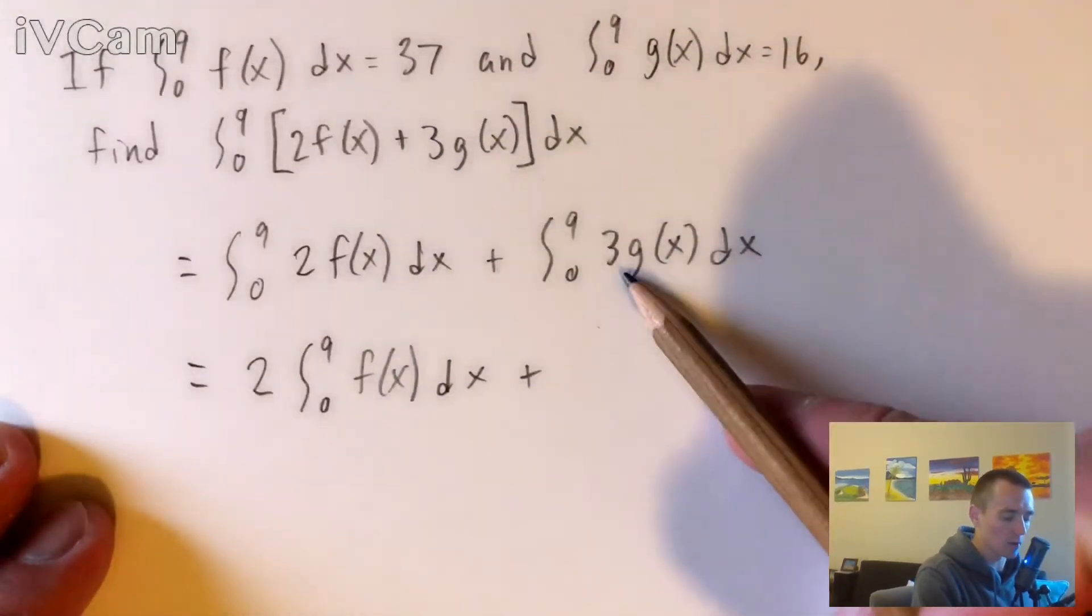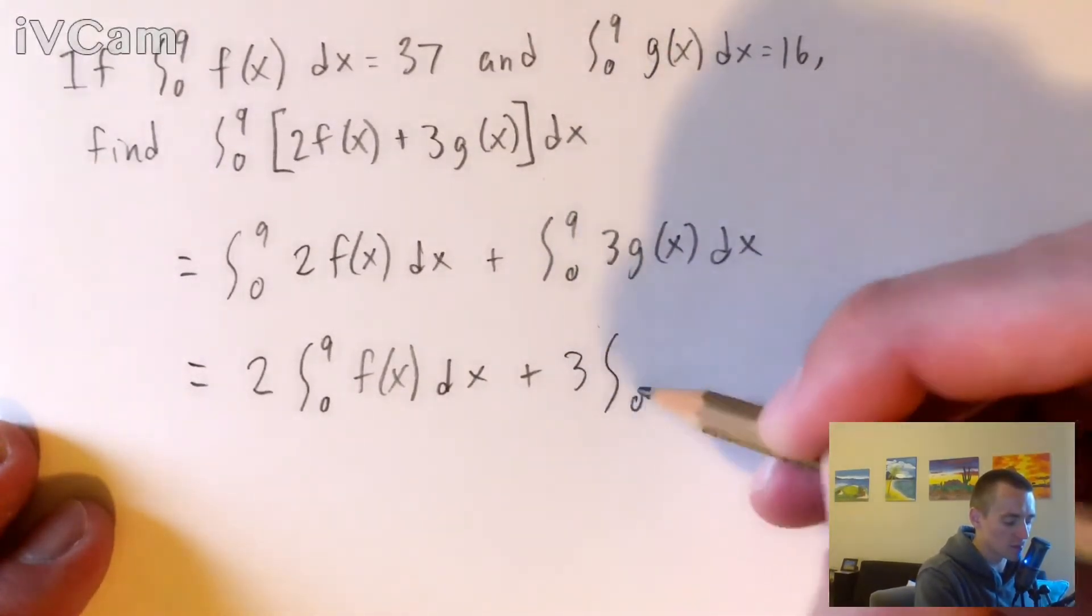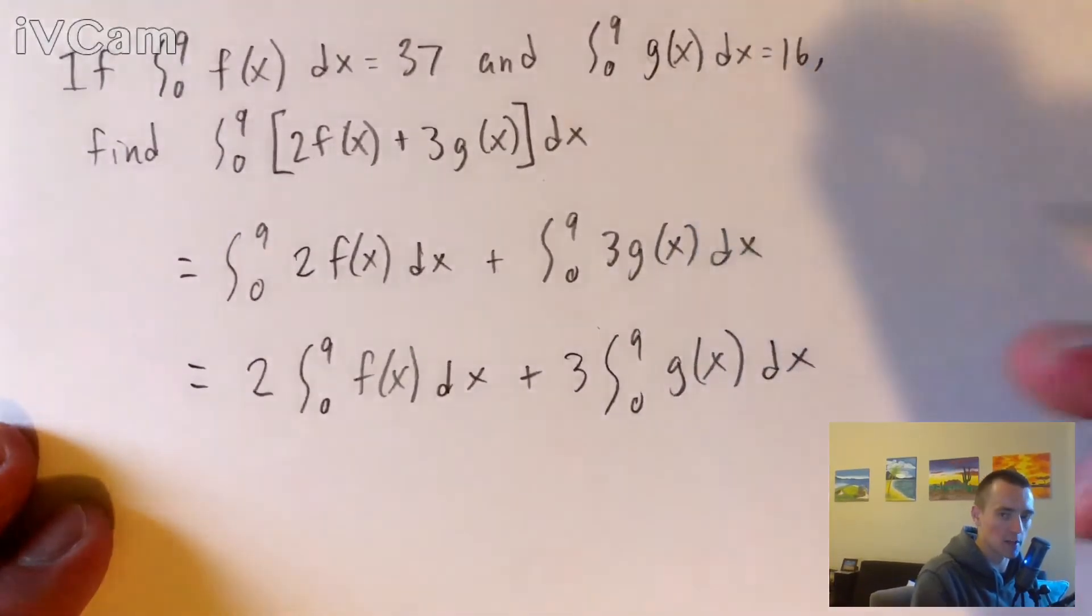And then we can pull our constant three out of this one because it's just three times this whole function of x here. And we're gonna get three times the integral from zero to nine of g(x), with respect to x.